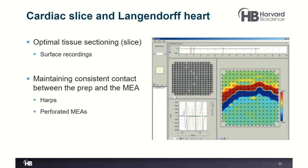For Langendorff heart preparations, you need a good mechanical manipulator to hold the flexible MEA in place so it doesn't wobble, and strong contractions can also cause movement and reduce recording quality. Some flexible MEAs made of polyimide have a similar flexibility to hair, so they move with the heart and contractions do not significantly affect system noise.